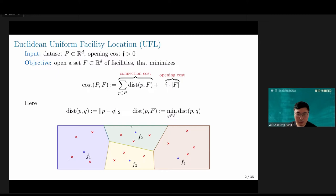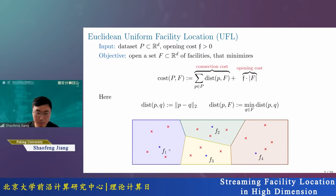Here is an illustration. We open four facilities, and these red crosses are the data points. The connection cost is the distance from these red crosses to the nearest facility. The opening cost is four times F. That's the problem definition.